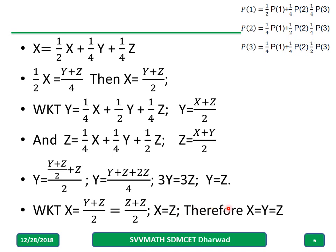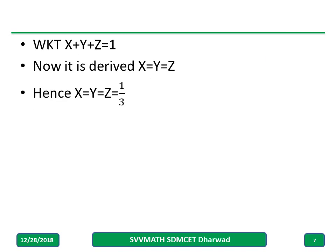Now, we concluded x equal to y equal to z. We know that x plus y plus z should be equal to 1, because all the probabilities when you add, answer should be 1. Now, we know x equal to y equal to z. So, hence, I can say x equal to y equal to z equal to 1 by 3.